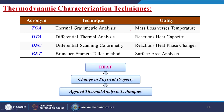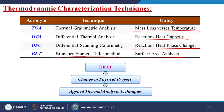Now we are going to discuss about the thermodynamic characterization techniques. There are some sub-techniques: first is TGA, thermogravimetric analysis — mass loss versus temperature. Next is DTA, differential thermal analysis — reactions and heat capacity. Next is DSC, differential scanning calorimetry — reaction heat and phase changes. And the last one is BET, Brunauer–Emmett–Teller method — for surface analysis. We apply heat to the samples, observe change in physical property, and apply the appropriate thermal analysis technique.